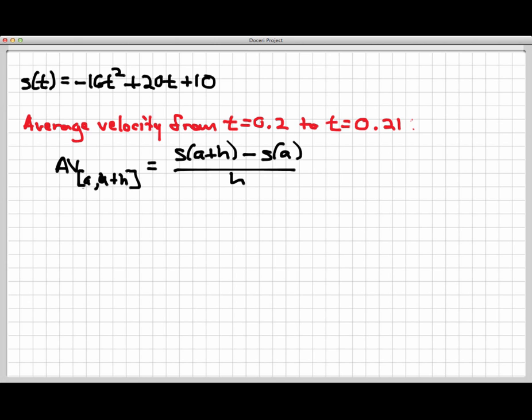So I've just copied down the new version of the average velocity formula here. The average velocity on a time interval that starts at a and ends at a plus h is s of a plus h minus s of a divided by h. Now remember, a is the starting time here, and so that's going to be 0.2 in this case.